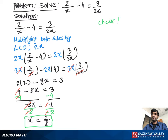To check this problem we write the original equation one more time: 2 over x minus 4 equals 3 over 2x. Now we substitute the x value. So we write 2 over 1/8 minus 4 equal to 3 over 2 times 1/8.